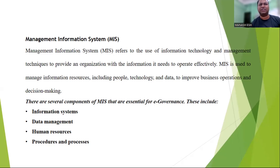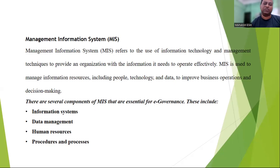The implementation of e-governance using MIS can help streamline government processes, reduce corruption, and improve transparency. It can also improve citizen engagement by providing access to services such as online payment of taxes and fees, online voting, and online access to government documents. Several components of MIS are essential for e-governance: information systems including hardware, software, and networks; data management for storage and analysis; human resources who design, implement, and maintain e-governance systems; and procedures and processes that govern the use of these systems. One of the key benefits of e-governance using MIS is improved efficiency — government systems can automate many processes such as issuing permits and licenses.